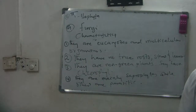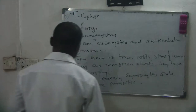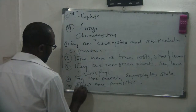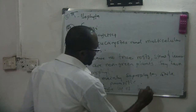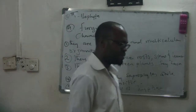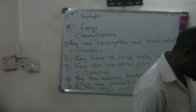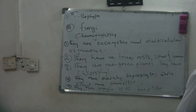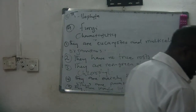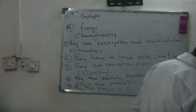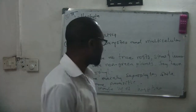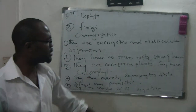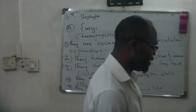Number five: the vegetative plant body of fungi is made up of fine and delicate threads called hyphae. When you draw a fungi you see that it is made up of these fine delicate threads known as hyphae.